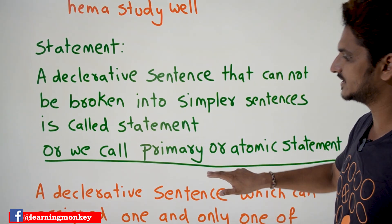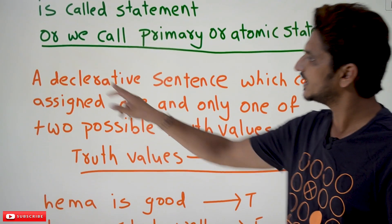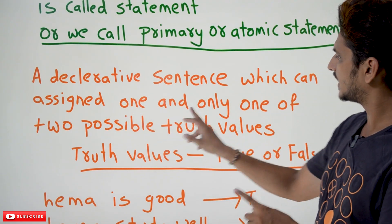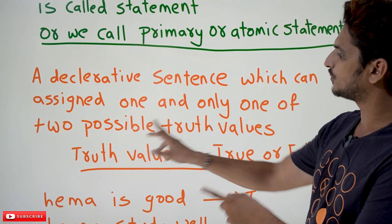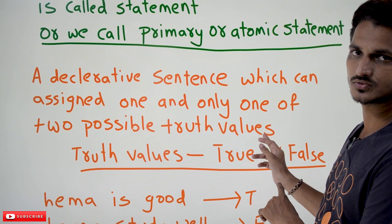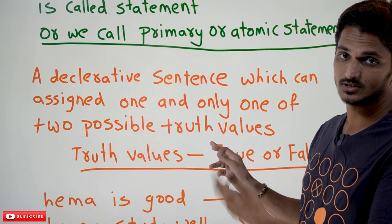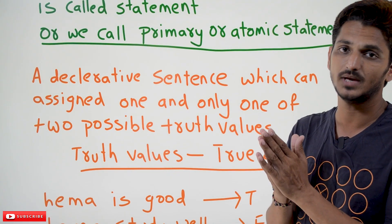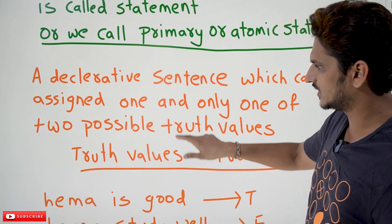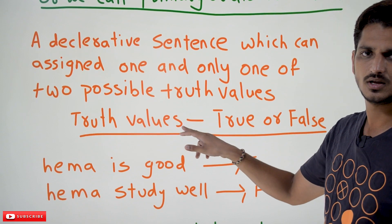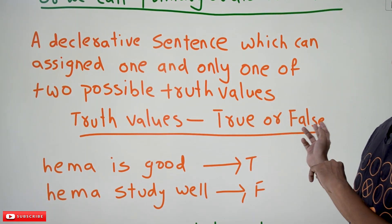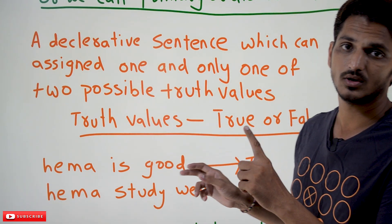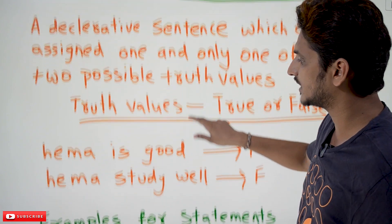What is the second condition? Let's understand the second condition. A declarative sentence which can assign one and only one of the two possible truth values. We call it as only these two values can be assigned — any one of the truth values can be assigned. What is meant by truth values? Either true or false. We can assign any one of these values. With an example, we are going to understand it better.